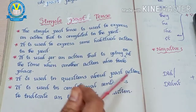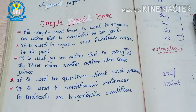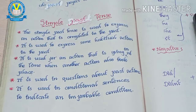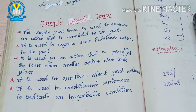Simple past tense is also used in questions about the past. For example: 'When did you leave this job?' — that is the question form of past tense. It is also used in conditional sentences to indicate an improbable condition. For example: 'If he came, I would meet him.' Conditional sentences also use simple past tense.